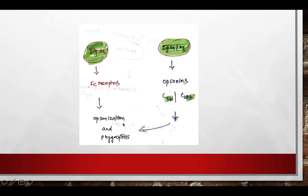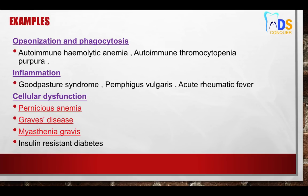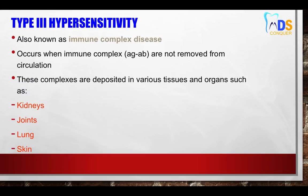The three mechanisms of Type 2 hypersensitivity are: phagocytosis, neutrophil degranulation, and lysis via MAC molecules. Examples include autoimmune hemolytic anemia and autoimmune thrombocytopenia for phagocytosis; post-streptococcal syndrome, pemphigus vulgaris, and acute rheumatic fever for inflammation-related; and cellular dysfunction examples you should make note of from the slides.